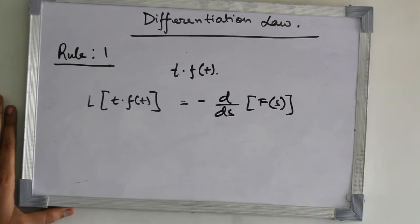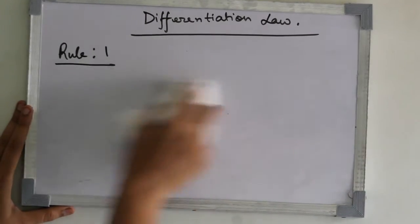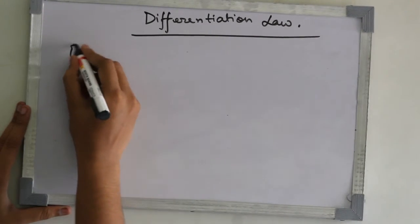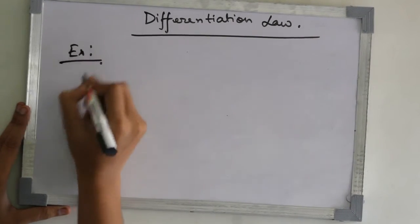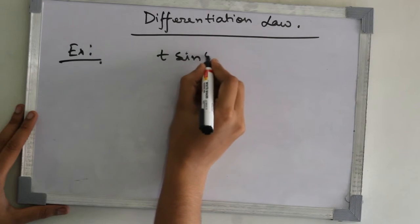Now, I am going to show you an example of this. Let's take, for example, a function t into sin 4t.